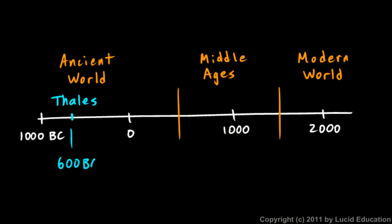Thales actually predates Greek civilization, even though he's considered a Greek philosopher — he was one of the early Ionian philosophers. And he solved this problem with the pyramids. The pyramids, even though they were also part of the ancient world, on this timeline would be way over at around 2600 BC. So even at Thales' time they were 2,000 years old. Thales traveled to Egypt, saw the pyramids, and came to realize this was a question people were wondering about: how tall is the Great Pyramid?